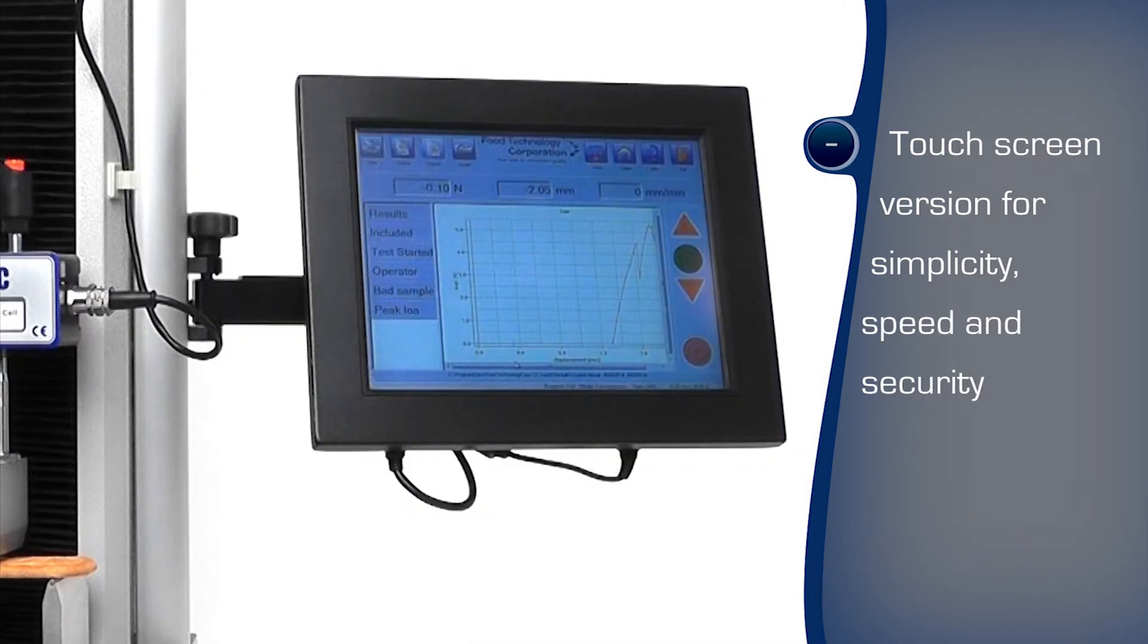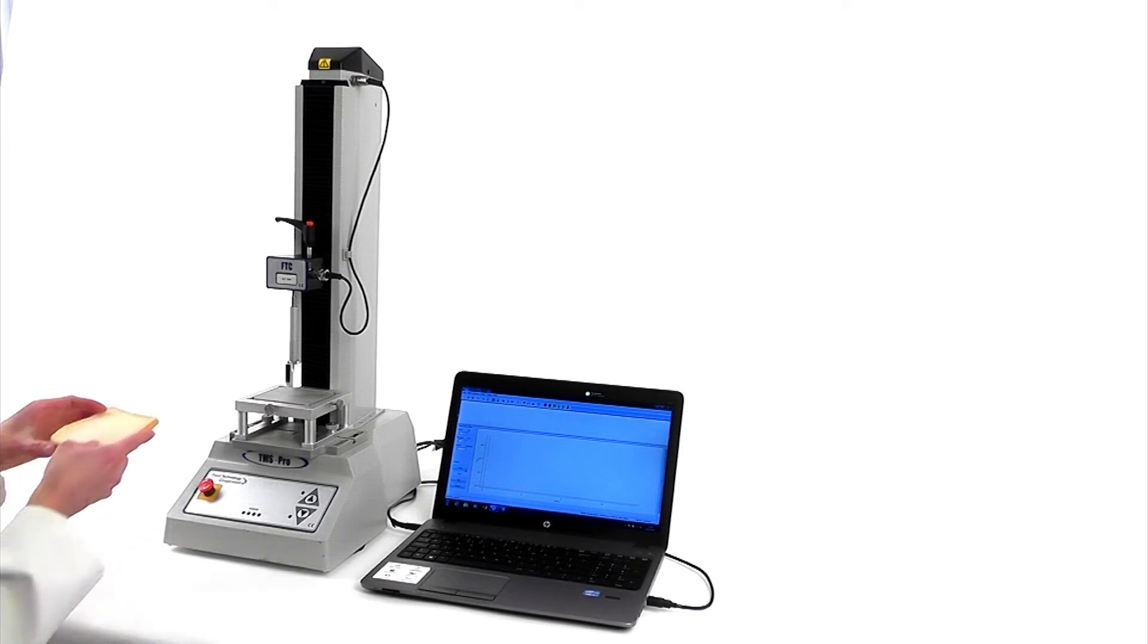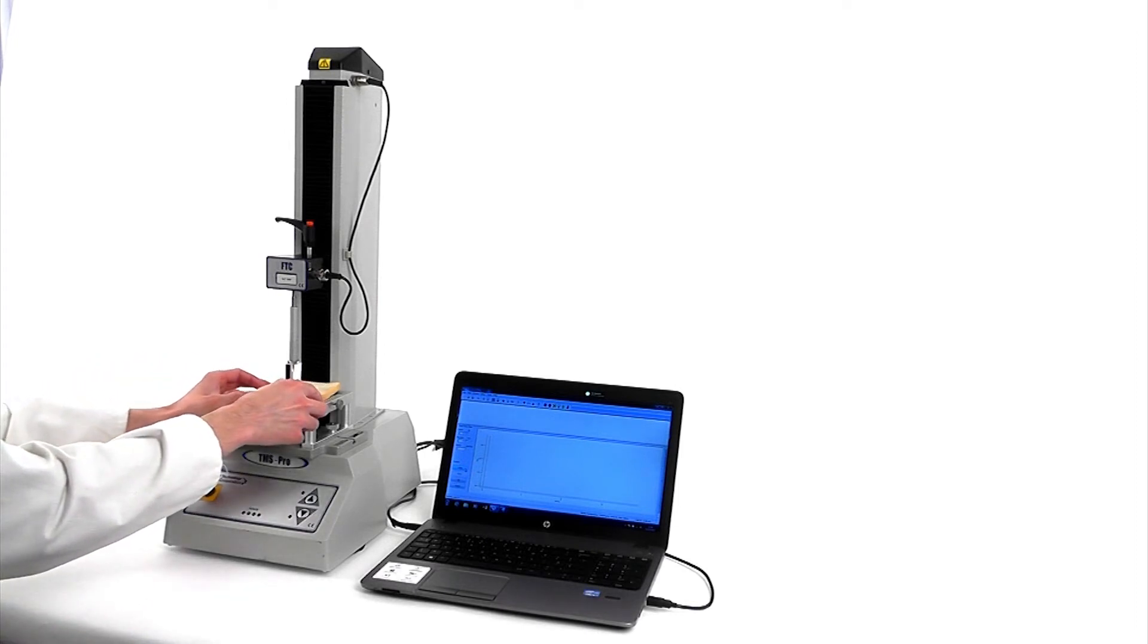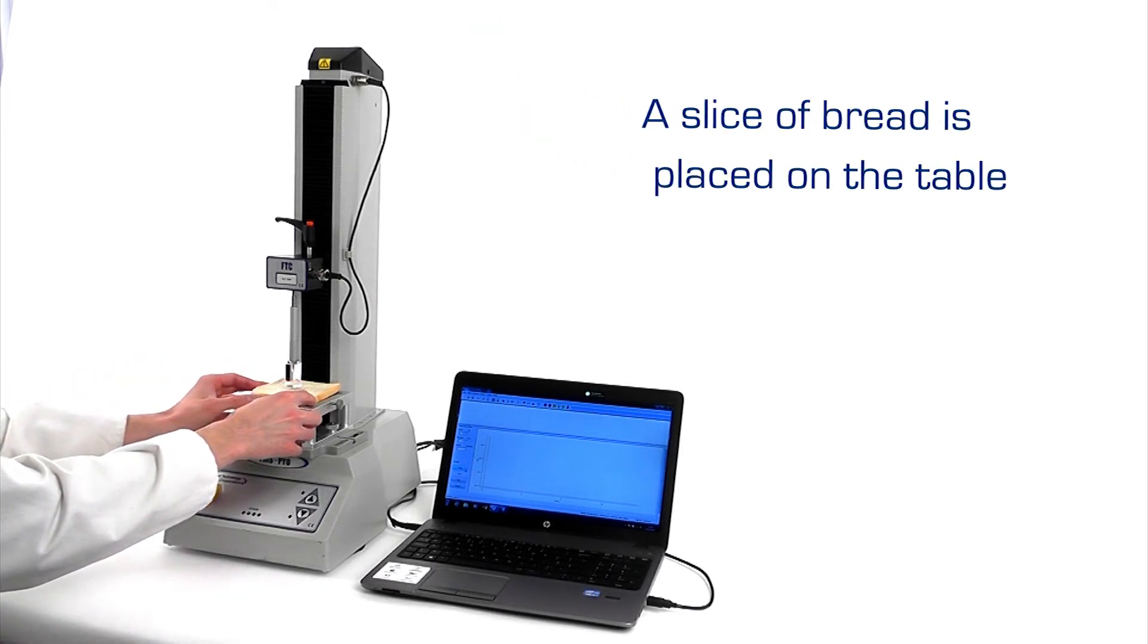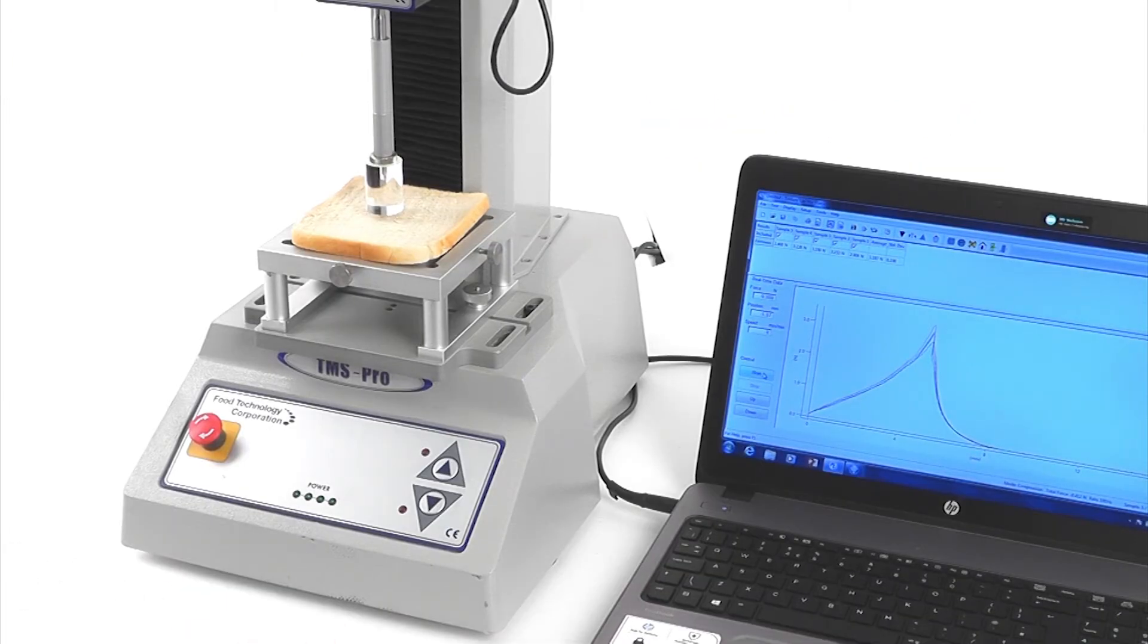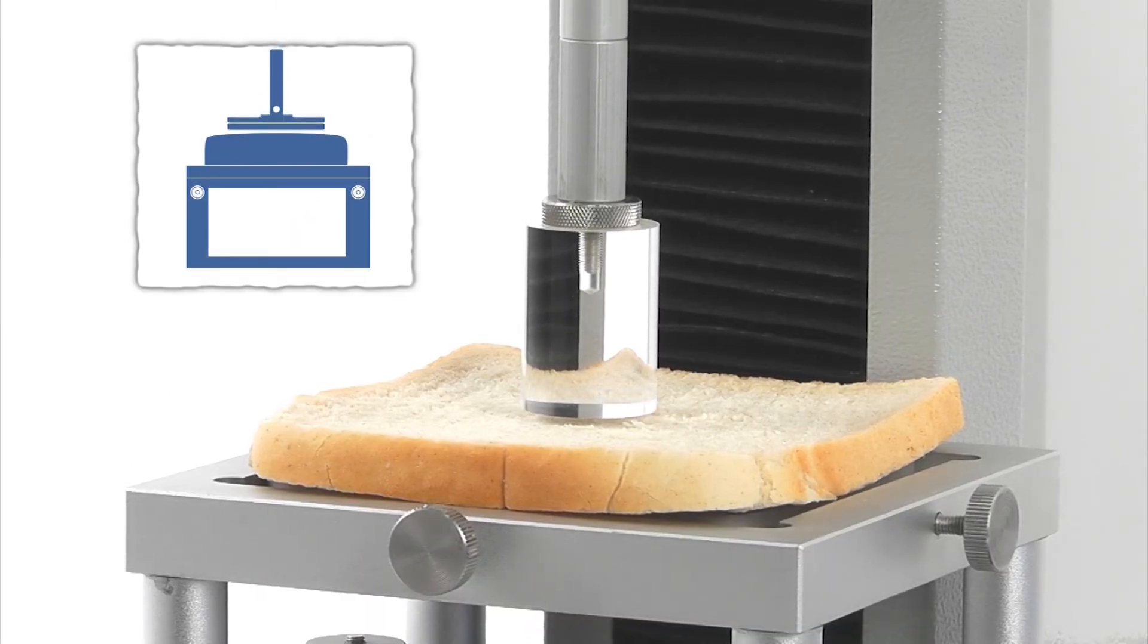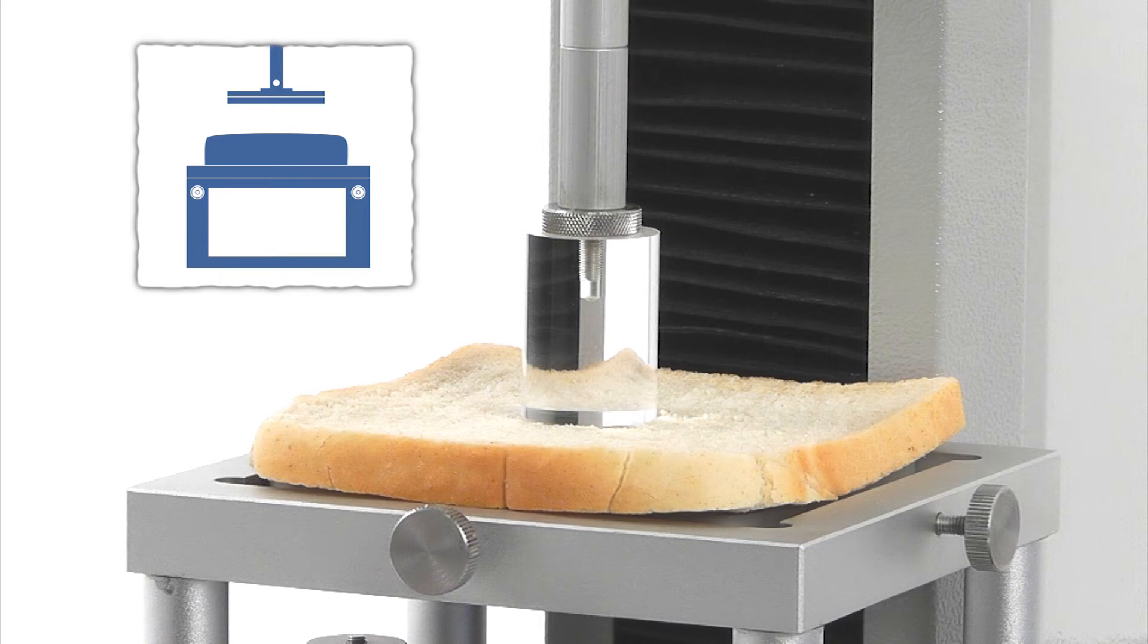The touch screen controlled texture analyser runs tests at the touch of a button with minimal training, ideal for production areas. The sample is placed on the flat, solid fixture table to preclude penetration or puncture. The test procedure will slowly move the probe to detect a touch on the bread, then move just a short distance further, more quickly, to compress it.